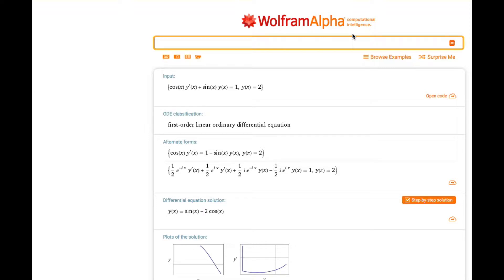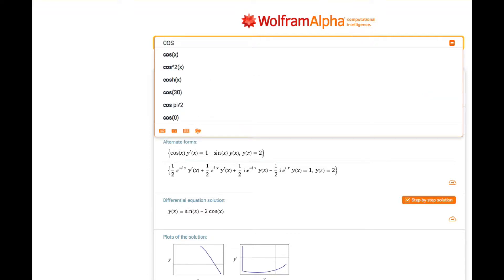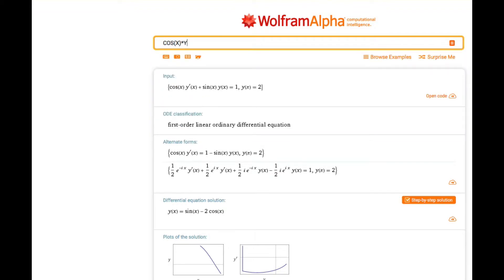That is cos of x multiplied by y prime plus sin of x multiplied by y, that was equal to 1.